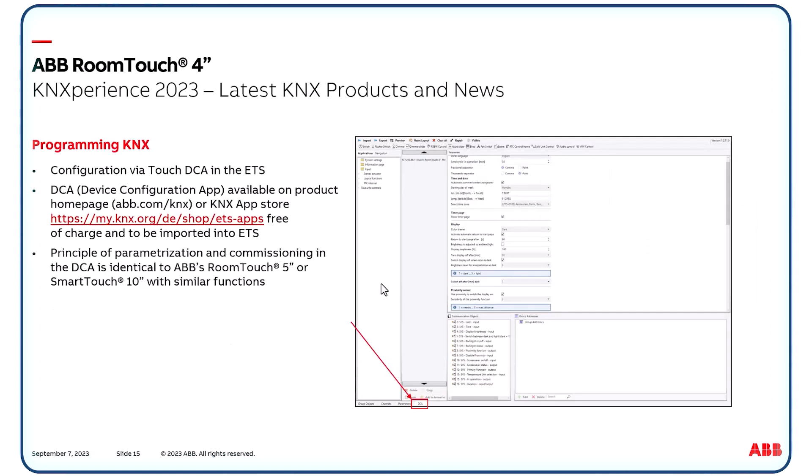The configuration is done via DCA in the ETS. DCA stands for Device Configuration App. It is well known nowadays in KNX, used for parameterization of many powerful KNX components. It is product specific, available on our product homepage abb.com/KNX or in the KNX App Store — free of charge, of course — and it has to be imported into ETS. The principle of parameterization and commissioning in the DCA is the same as with ABB's Room Touch 5-inch or Smart Touch 10-inch, and there are also similar functions.